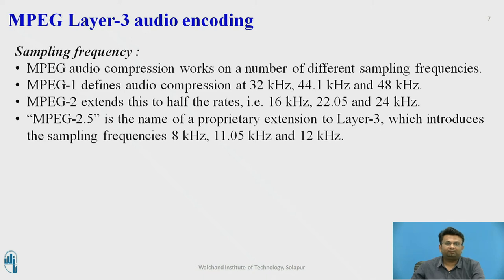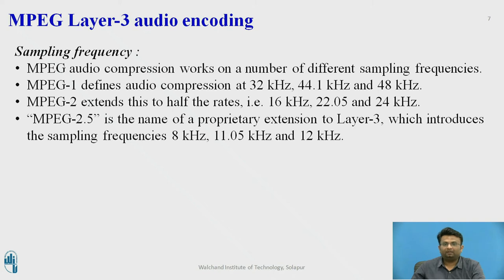Next, the sampling frequency in MP3 encoding. MPEG audio compression works on a number of different sampling frequencies. MPEG 1 defines audio compression at 32 kHz, 44.1 kHz, and 48 kHz. MPEG 2 extends this to half rates: 16 kHz, 22.05 kHz, and 24 kHz. MPEG 2.5 is the extension to Layer 3, which introduced sampling frequencies of 8 kHz, 11.025 kHz, and 12 kHz.